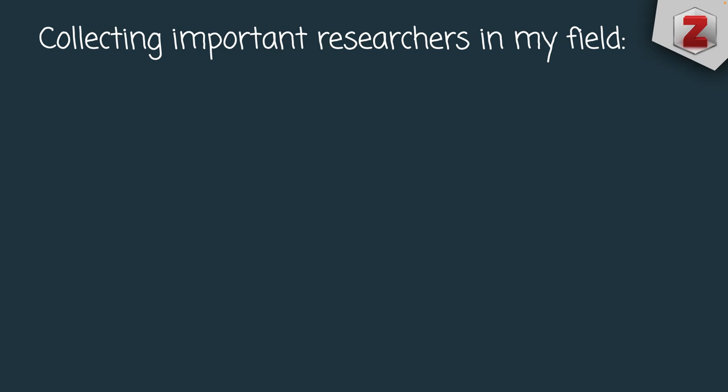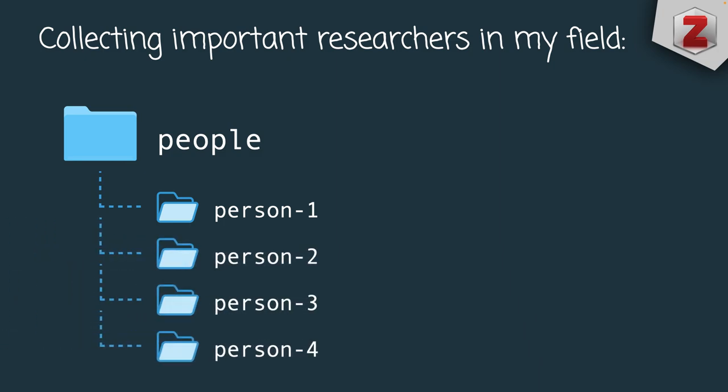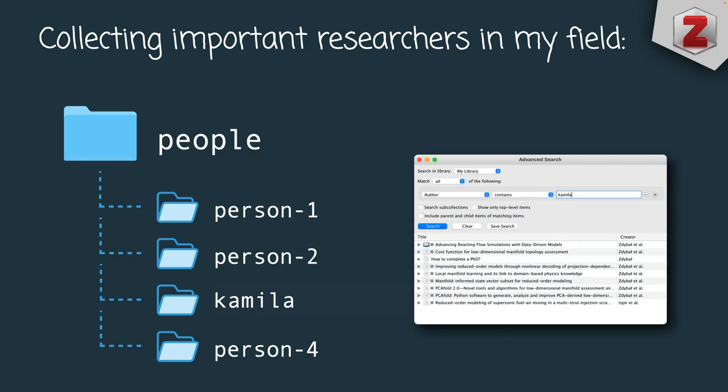I also have a collection that stores literature organized by specific authors — always the most important researchers in my field whose work I often return to. During my PhD, it was useful to have sub-collections storing all papers written by my advisors. This is also where I store my own publications, as I often need to go back to my past work. While Zotero allows you to search your whole database by author, I find it more handy to have the sub-collection ready without needing to use the search function.